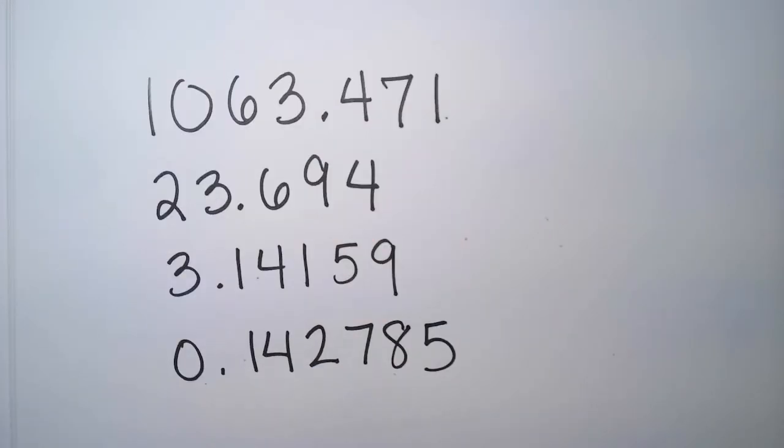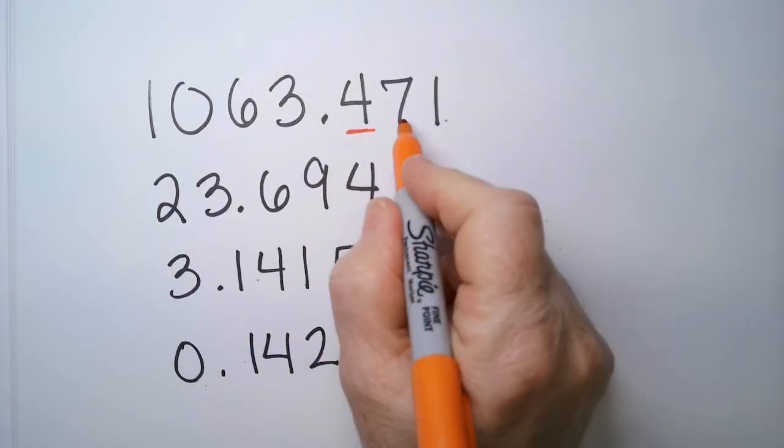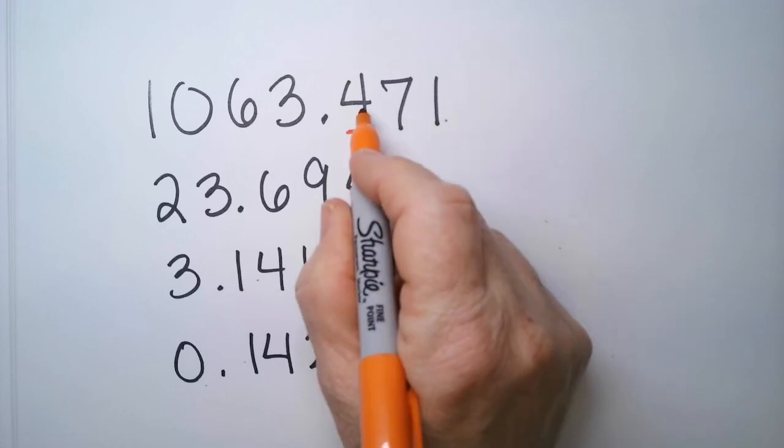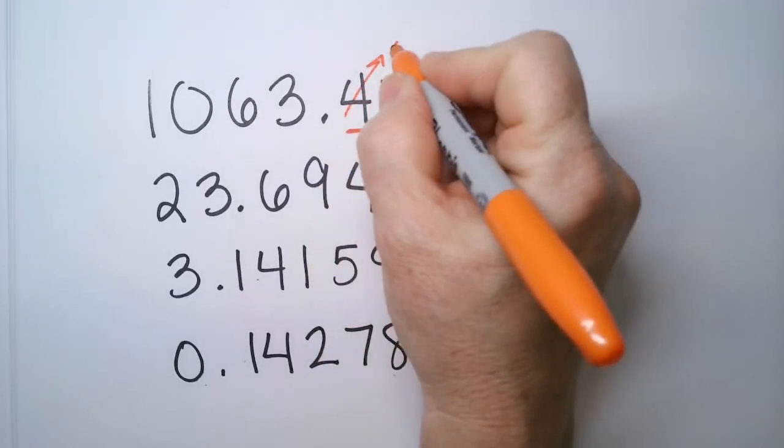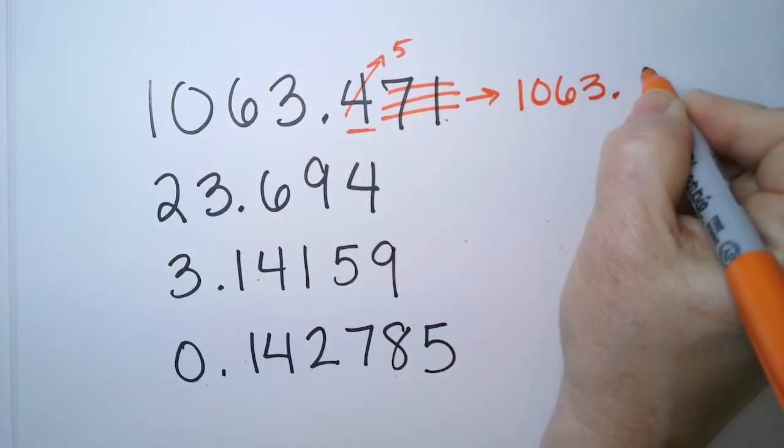Let's try a few more. Round the top one to the nearest tenth. So I'm going to find that here, and we peak next door. That's a 7. So that tells me that this is going to get bumped up to a 5. This still goes away. So this becomes 1063.5.